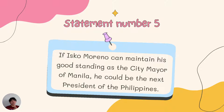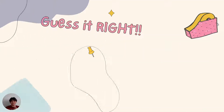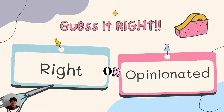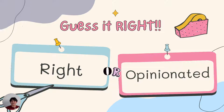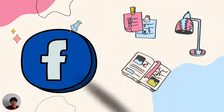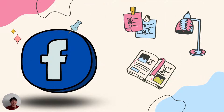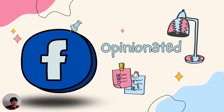This next activity is called Guess It Right. This time, I will no longer show you statements, but a photo of different sources we use every day to gather information. All you have to do is to determine whether that particular source gives right or opinionated information. Are you guys ready? Let's get started. First photo is Facebook — if you answered right, then you are wrong. It's opinionated.